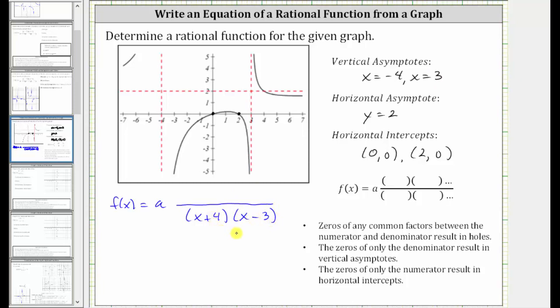And now we can determine factors of the numerator from the horizontal intercepts. The zeros of only the numerator result in horizontal intercepts. So because we have horizontal intercepts at x equals zero and x equals two, x must be a factor of the numerator, and so must x minus two. Notice that zero and two are zeros of x times the quantity x minus two.